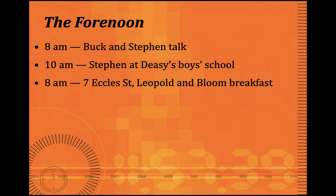Molly has already opened a letter from Blazes Boylan — the sleazy manager of her singing tour — who is going to visit her at 4 p.m. Leopold Bloom immediately knows they will have sex that day. Bloom emerges in this opening scene as a sympathetic and compassionate man. He goes downstairs, reads a letter from his daughter Millie, and also urinates outdoors — a scene that Virginia Woolf hated and was very angry about.